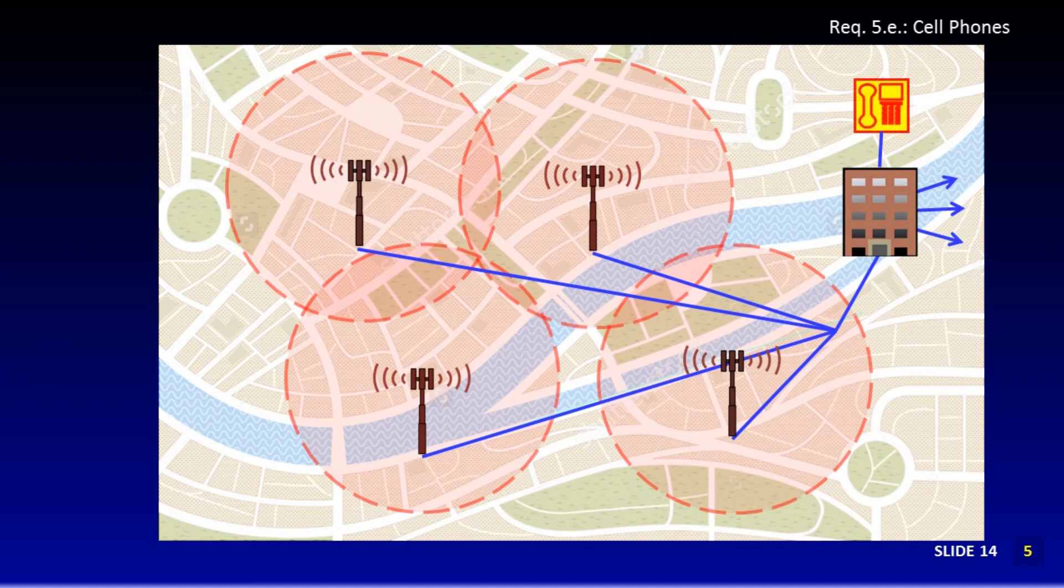The base station antennas are wired directly to the cell carrier's network, which ties the base stations together around the country. The cell carrier's network is also tied to other carrier's network through the standard telephone system, the public switch telephone network.